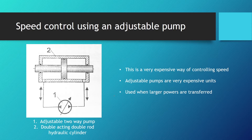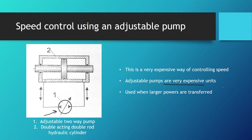One of the more expensive ways of controlling the speed of hydraulic cylinders is by adjusting a two-way adjustable pump, so we directly change the flow. Remember from the pump section when we talked about positive displacement pumps — some pumps are adjustable, for example an axial piston pump. However, those kinds of units are usually very expensive, and this method is used only when larger powers are transferred.